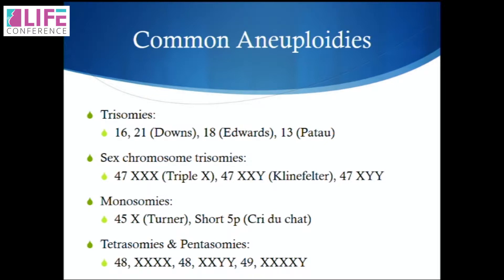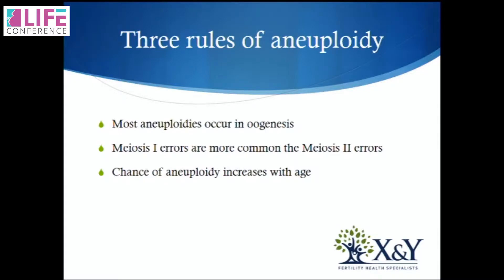We also have the monosomies such as Turner's, and we have tetrasomies and pentasomies — many conditions where aneuploidy occurs. Most aneuploidies occur in oogenesis, in meiosis I rather than meiosis II, and the chance of aneuploidy increases with age. There are graphs showing the increase of trisomies with age and the increase of aneuploidies from maternal age.